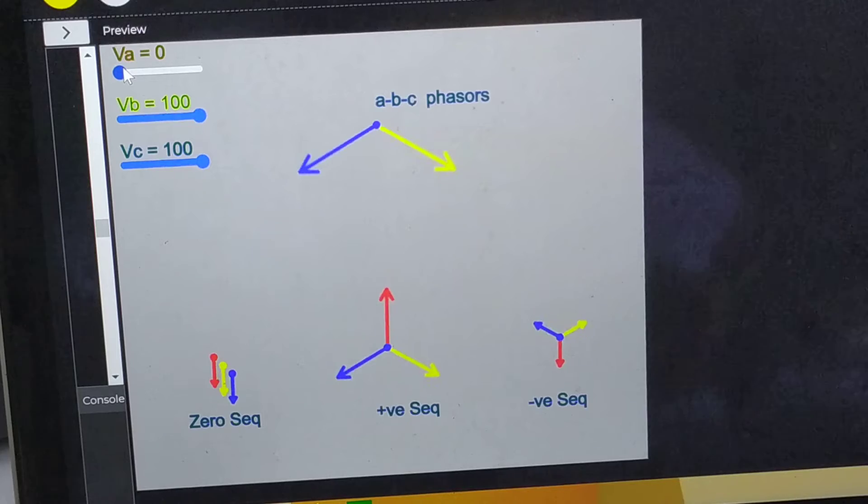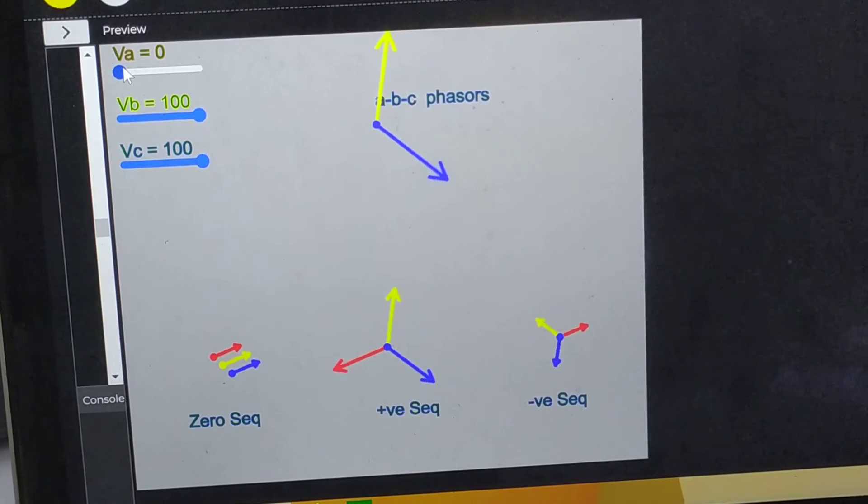A phase is zero. Only Vb and Vc. So still there is a substantial amount of positive sequence, but there is zero sequence and negative sequence.